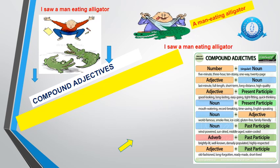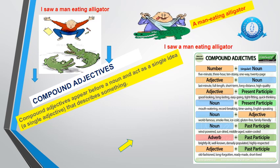Compound adjectives are used to give more definition to writing. They appear before a noun and act as a single idea. They describe something — mostly a noun. They make our writing more precise, give detail to our writing, and actually shorten our writing too.